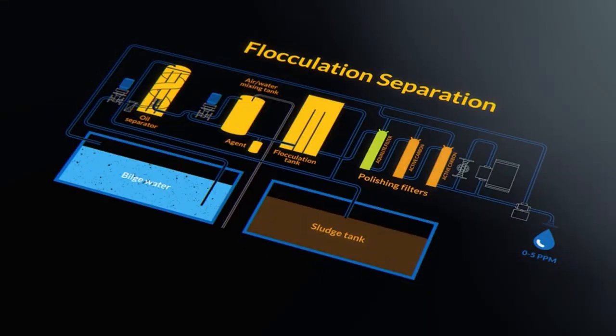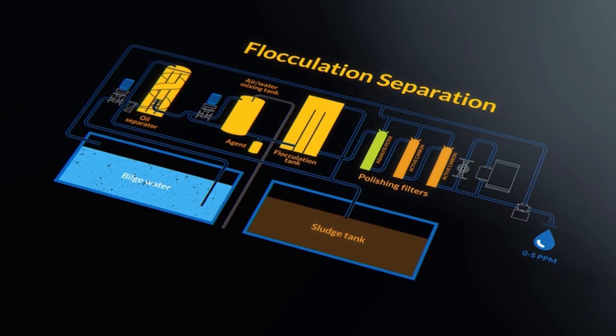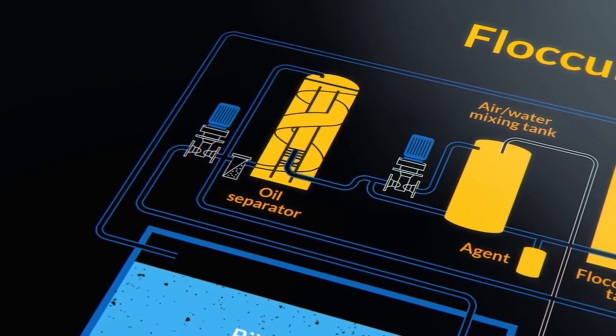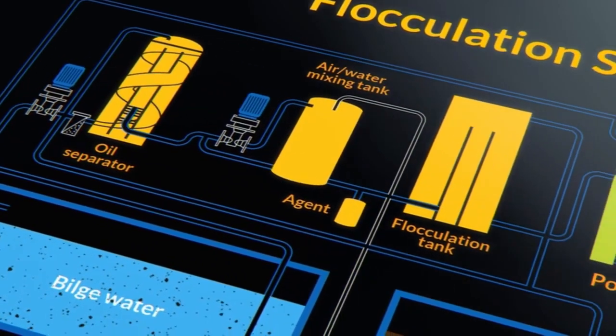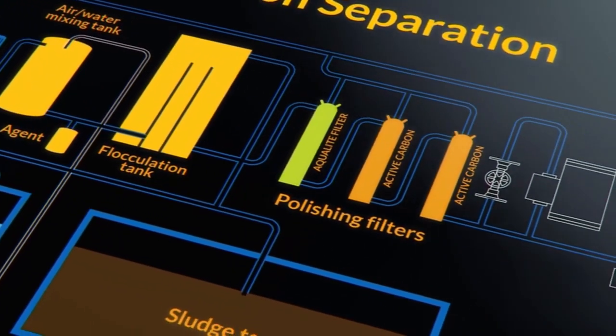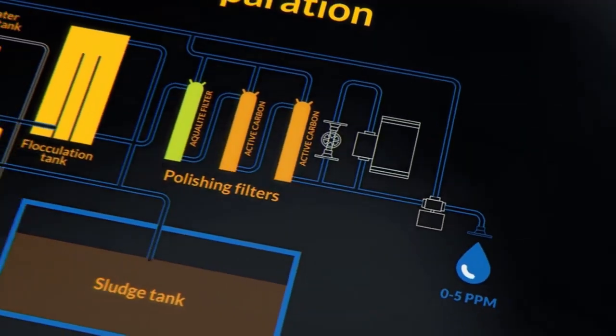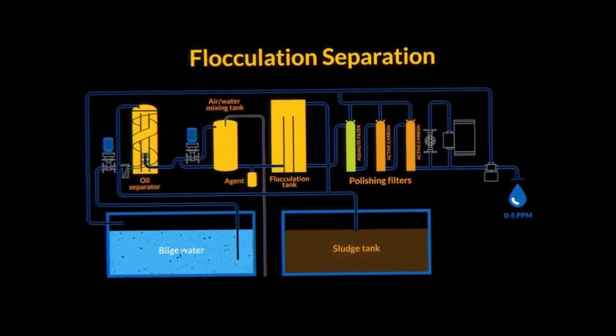In this chapter you'll learn about working principles of flocculation and the main components of a flocculation type bilge separator. Bilge water separators using chemical flocculation are claimed to be the most efficient and are one of the most popular types, so pay special attention to this chapter.